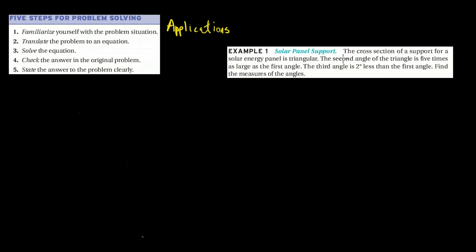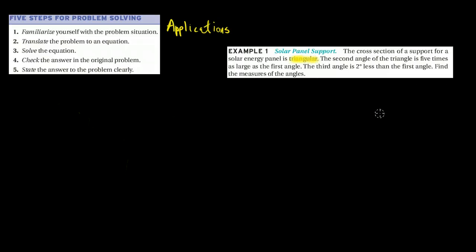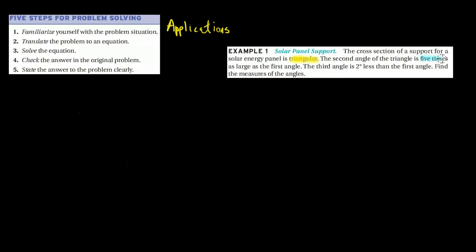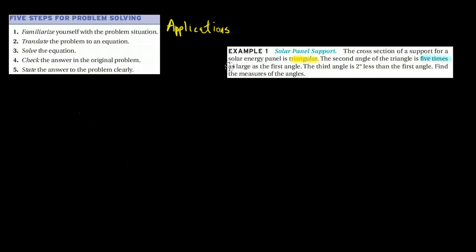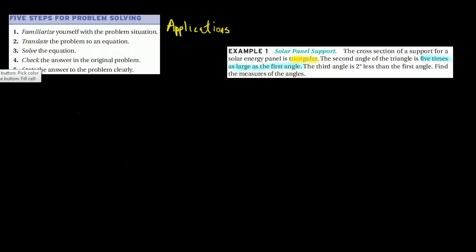It says the cross-section of a support for a solar energy panel is triangular. So I'm going to highlight that because it seems important that it's triangular. And say that the second triangle is five times as large as the first angle.